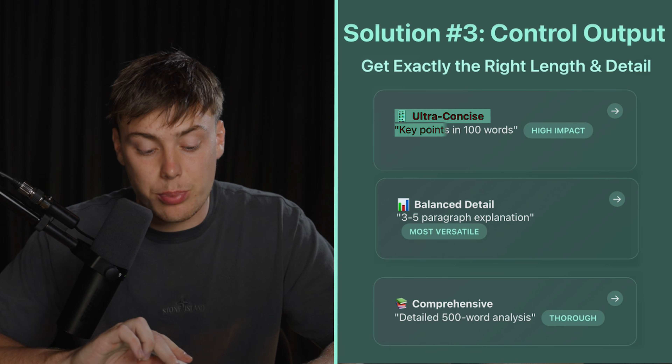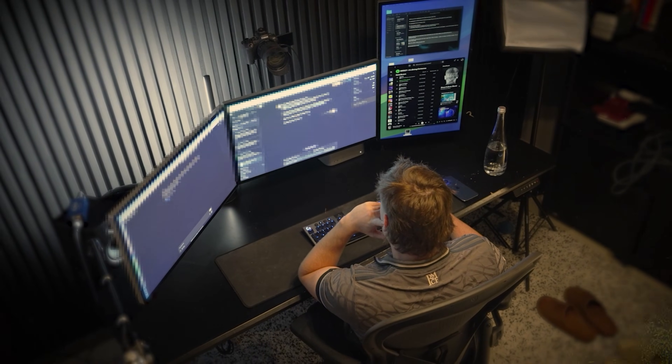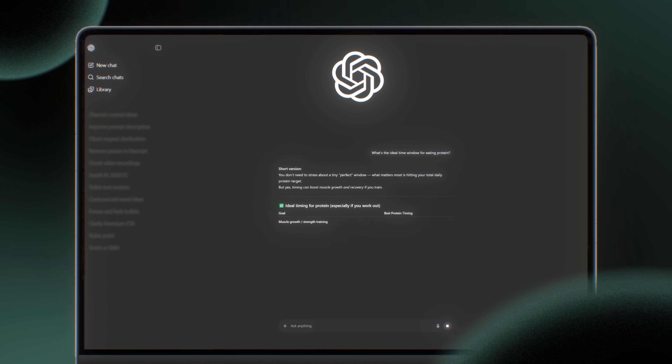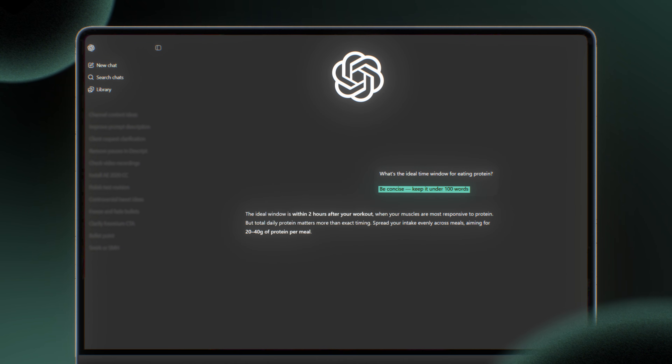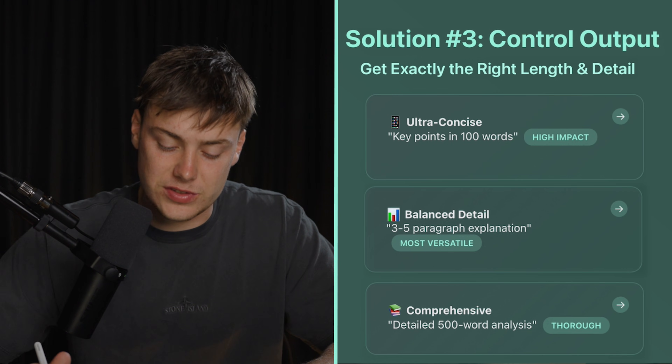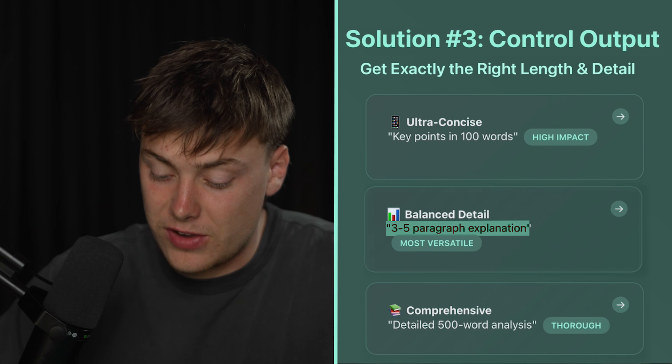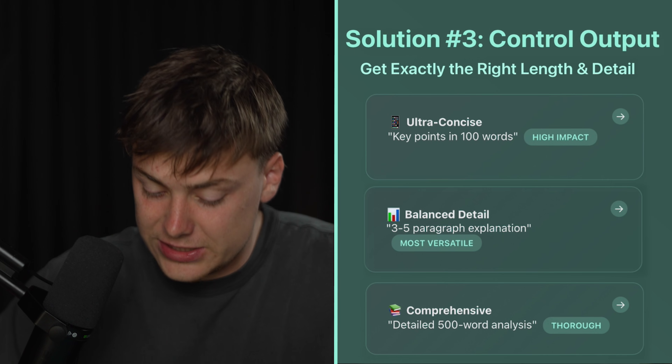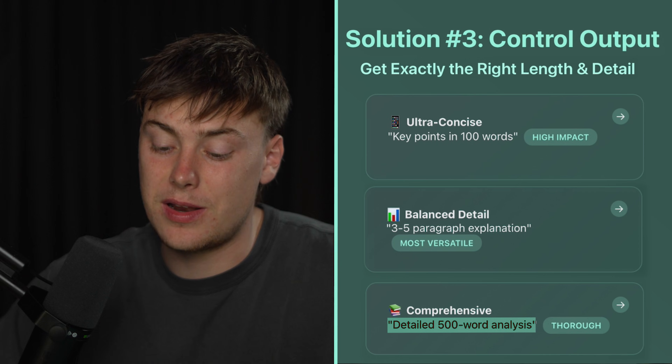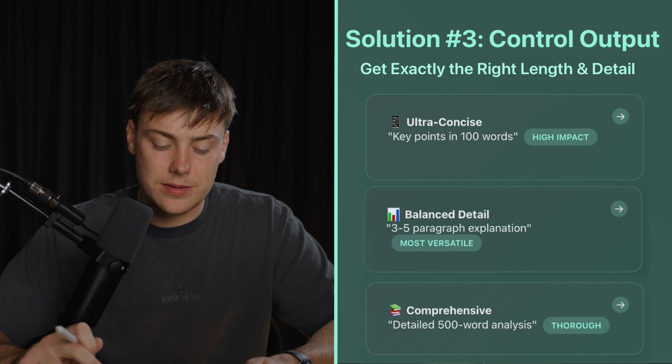If you say "ultra concise key points in 100 words," it's going to summarize in 100 words. The other day I was doing some research on protein muscle synthesis, trying to work out what windows to eat my protein in for maximum results. Without specifying, it gave me huge answers. Then I redid the prompt and said "be concise, under 100 words" — and it gave me exactly the information I wanted with no fluff. Just writing a few words can save you a lot of time. If you want more detail, you can say "three to five paragraph explanation" or ask for a 500-word analysis.